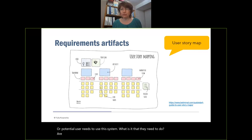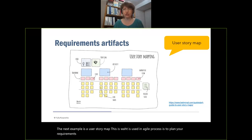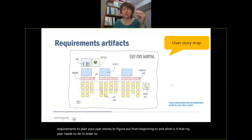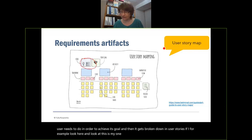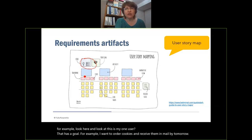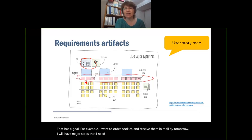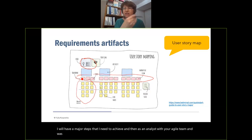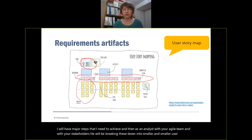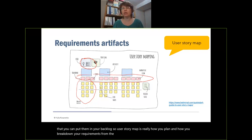The next example is a user story map — used in agile processes to plan your requirements and user stories, to figure out from beginning to end what my user needs to do in order to achieve their goal. It gets broken down into user stories. As an analyst with your agile team and stakeholders, you break this down into smaller and smaller user stories so you can put them in your backlog. A user story map shows how you plan and break down requirements from epics into user stories into smaller user stories, and it can also be useful for planning your sprints and releases.